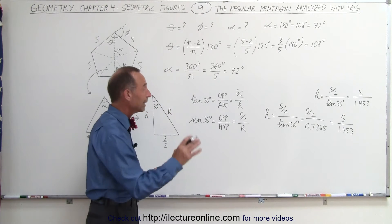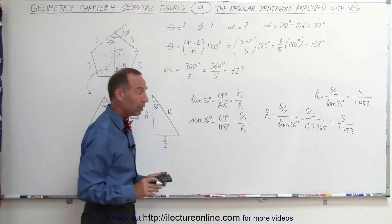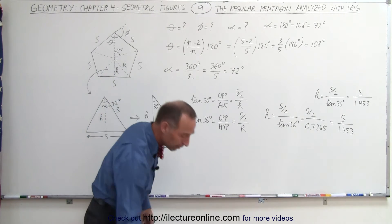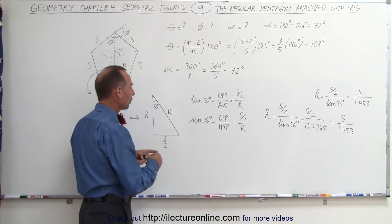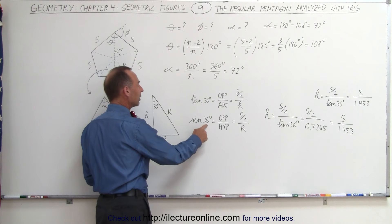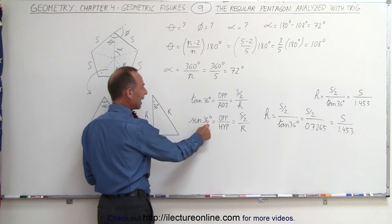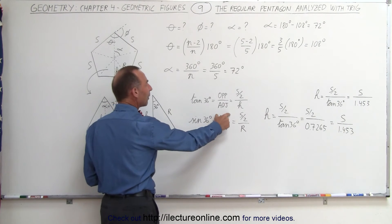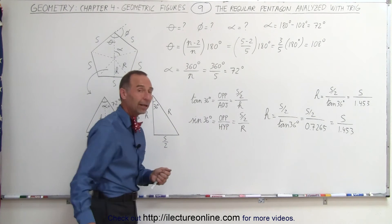So now we have a relationship between h and s. We can do the exact same thing for r. Notice in this case, what we're going to do is, we're going to use the trigonometric function, the sine of the angle. And the definition of the sine of an angle is equal to the ratio of the opposite side divided by the hypotenuse.